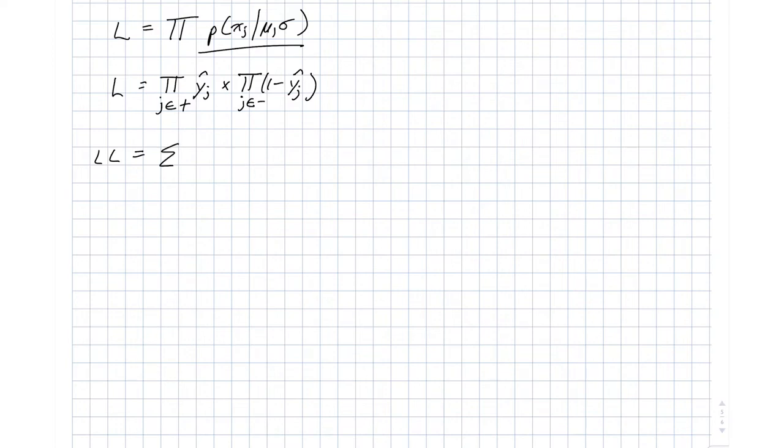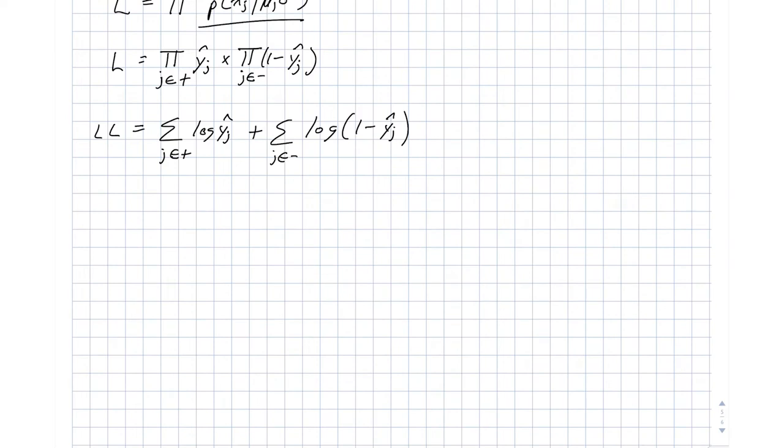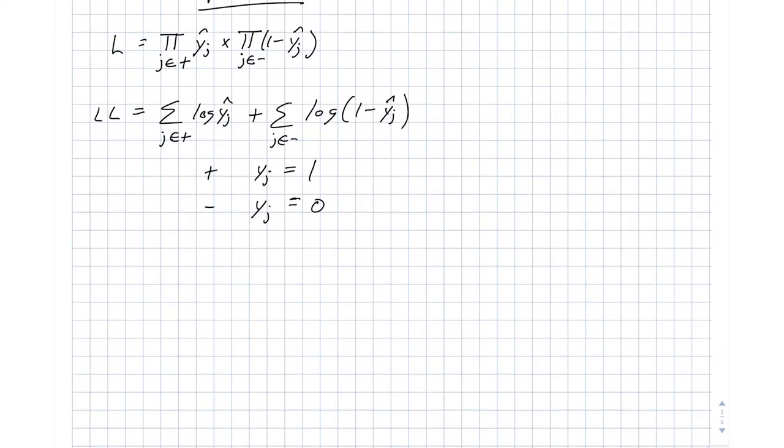And this is equal to our sum over our positive elements. And this is now log of y_j hat. And that's added to the sum over all of our negative elements. And this is our log of 1 minus y_j hat. It's convenient to be able to collapse these two sums down to a single sum. And the trick we're going to use here is that for the positive cases, we're going to assign y_j to 1. And for negative cases, we're going to assign y_j to 0. So let me rewrite this log likelihood function now.